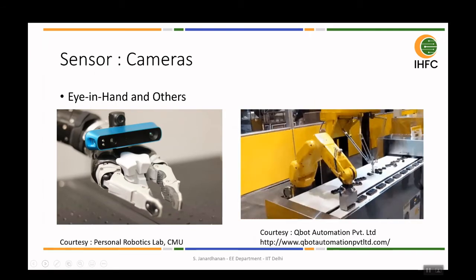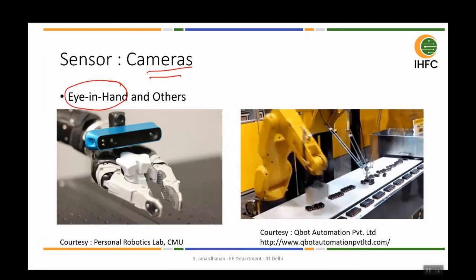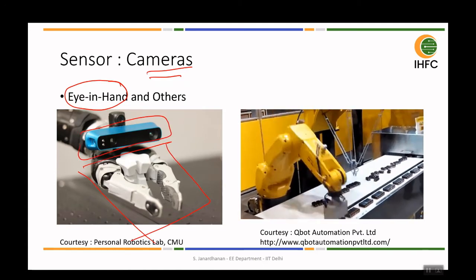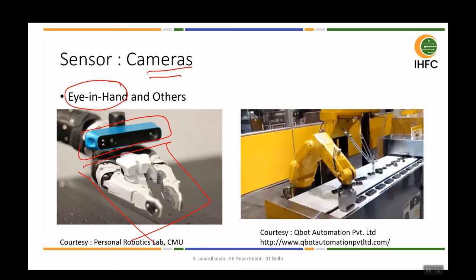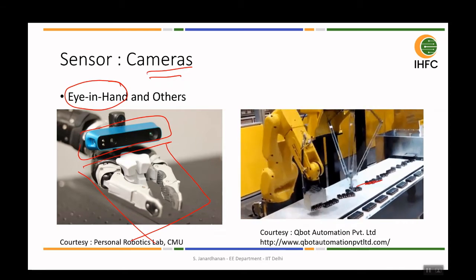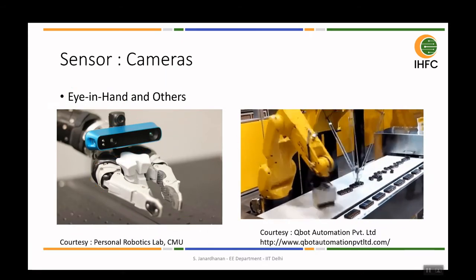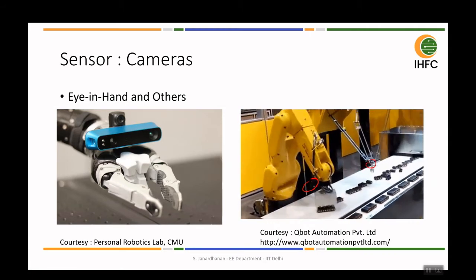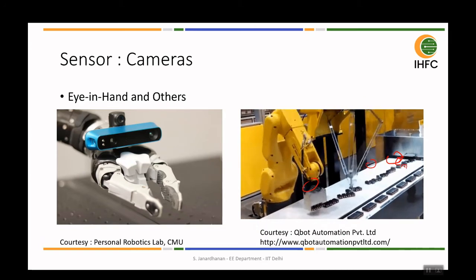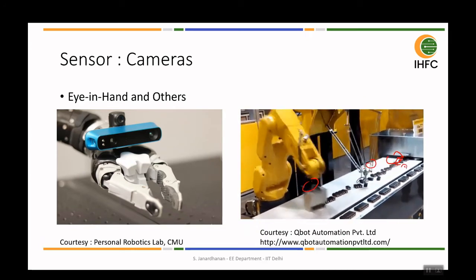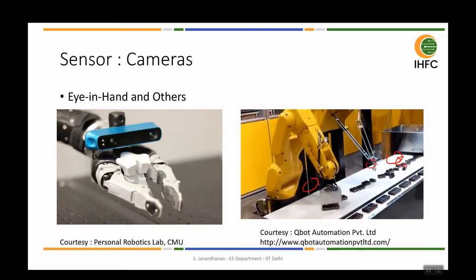The first case is robotic vision using a camera. One type is an eye-in-hand camera, where a camera is attached to the end effector of the robot. In an assembly line, two robots use cameras mounted at their end effectors to find the position and orientation of IC chips in the environment. An algorithm positions the robot appropriately and the robot picks and places the chips. The camera acts as a sensor in this case.